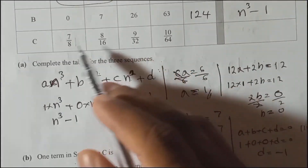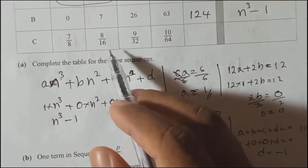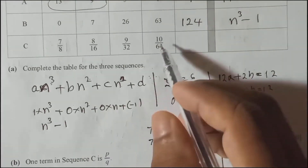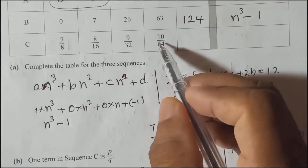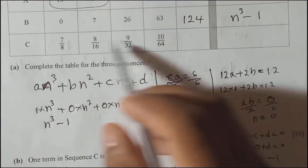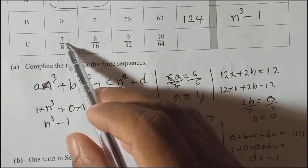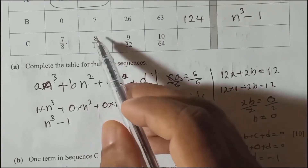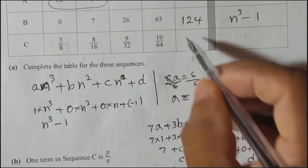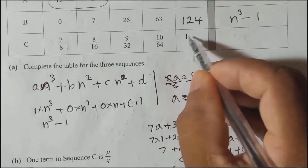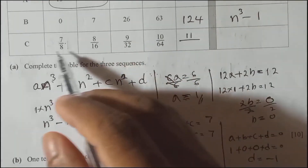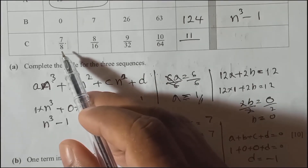Now we need to find sequence C. For the fifth term — looking at the numerators, this is an arithmetic sequence increasing by 1: 7, 8, 9, 10... so the fifth term numerator is 11.